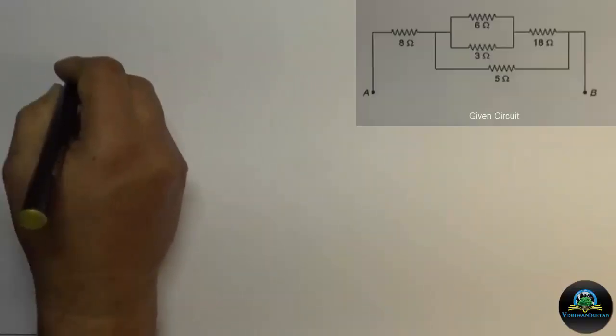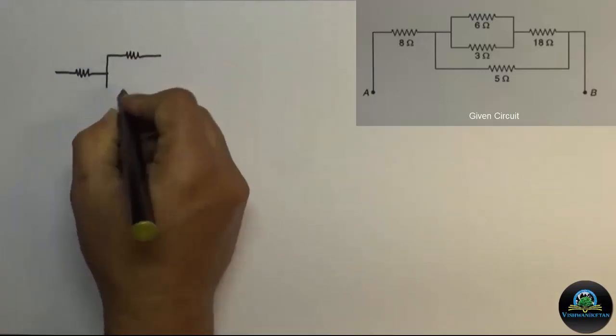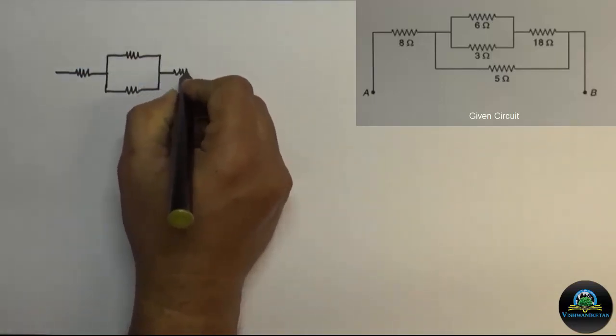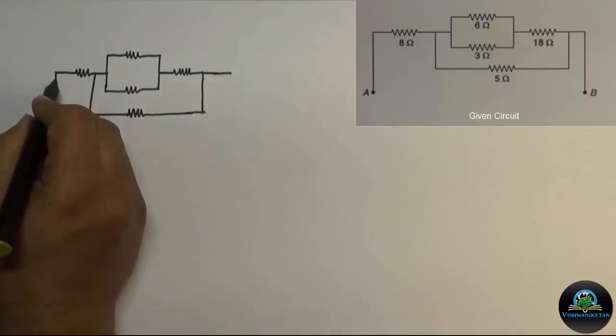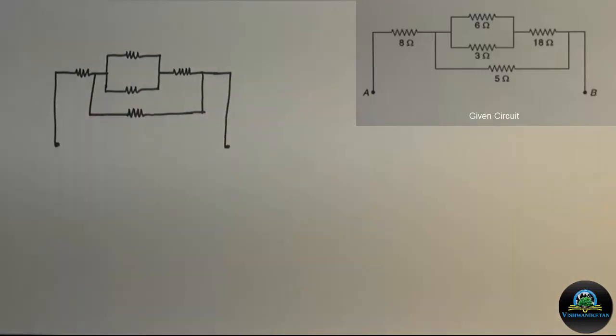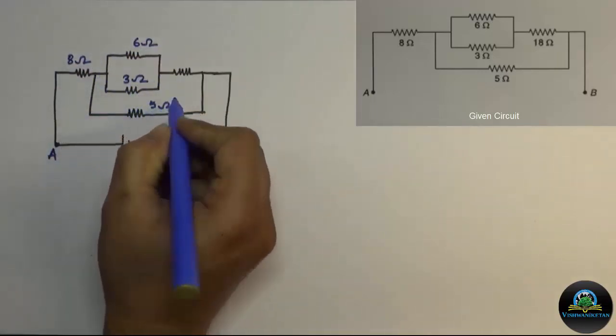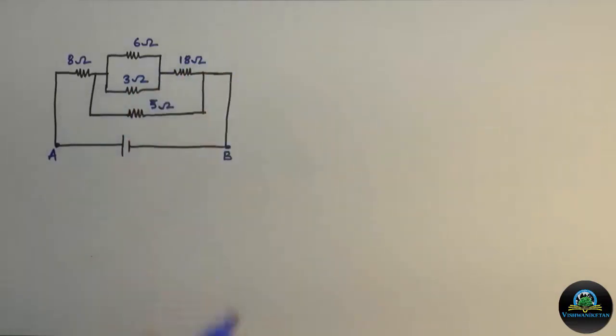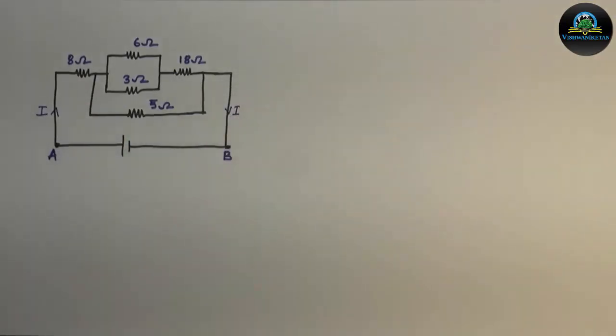Solution: Let us redraw the circuit by connecting a 60 volt source across points A and B. Also, let the current delivered by the source be I ampere. Now we will calculate the effective resistance between the points A and B.